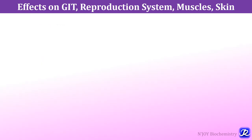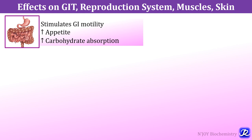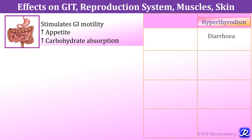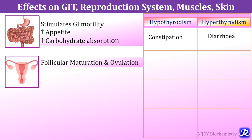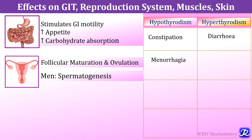In the GIT, thyroid hormones stimulate gastrointestinal motility, increase appetite and carbohydrate absorption. Increased thyroid levels are associated with diarrhea due to increased GI motility, and hypothyroidism is associated with constipation. In women, thyroid hormone increases follicular maturation and ovulation; in males it affects spermatogenesis. Hypothyroidism in women is associated with menorrhagia or polymenorrhea and infertility, while hyperthyroidism is associated with oligomenorrhea or amenorrhea.